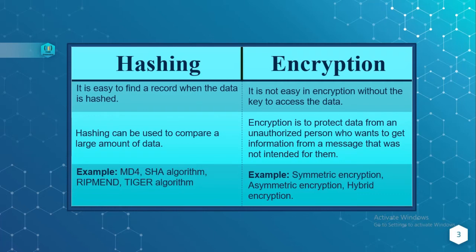Encryption is not easy to reverse without the decryption key. Hashing can be used to compare large amounts of data, whereas encryption is used to protect data from unauthorized persons who want to access information not intended for them. Examples: MD4, SHA, RIPEMD, and Tiger algorithms are used in hashing, whereas symmetric encryption, asymmetric encryption, and hybrid encryption are algorithms used for encryption.